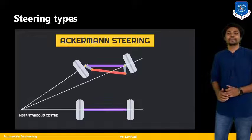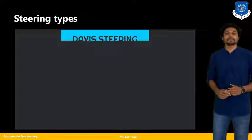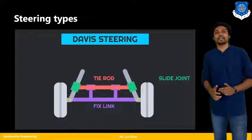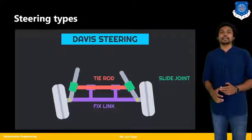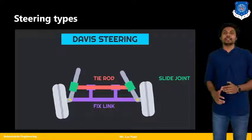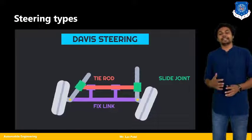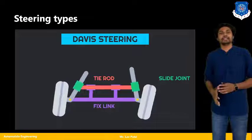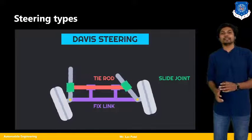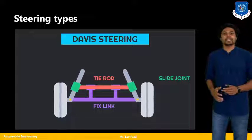In Ackermann steering, the instantaneous center is found at the rear axle point. The third type is Davis steering, which is a very complicated type of steering system. It has a tie rod as well as a fixed link, but a slide joint is also placed in the mechanism. With the help of that slide joint, the inner wheels and outer wheels react differently — the inner wheel has a high angle and the outer wheel has a very low angle at that point. This is the Davis steering system.